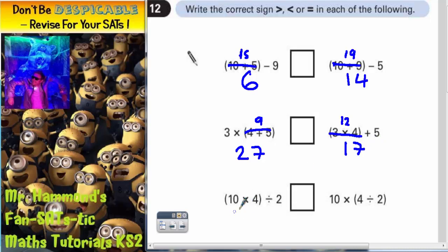Got to do the bracket first down here. So 10 times 4 is 40. So it's whatever's in the bracket divided by 2. So it's 40 divided by 2, which is 20.